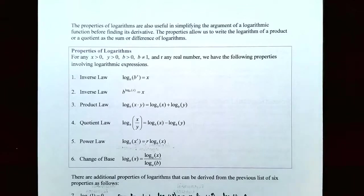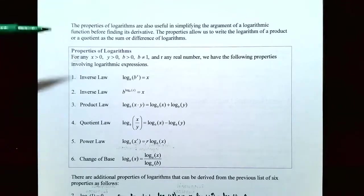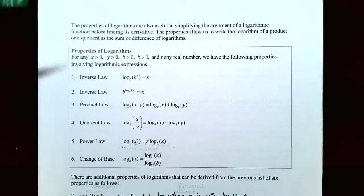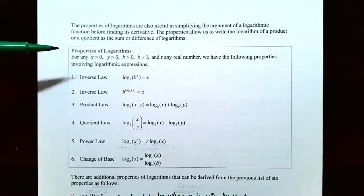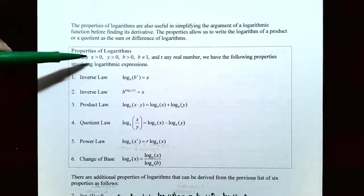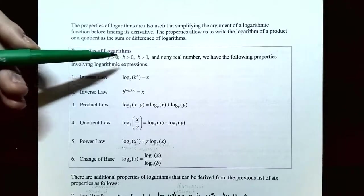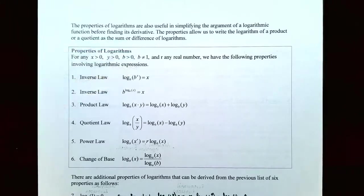Now that we know how to convert between exponential and logarithmic form, we're going to talk about the properties of logarithms. These are very useful in simplifying the argument of a logarithmic function before we find the derivative in the next video. The properties allow us to write the logarithm of a product or quotient as a sum or difference of different logarithms. For each of these properties: x is positive, y is positive, b is the base (positive and not equal to one).